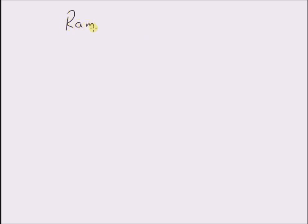Hello, welcome. In this short video, let us look at the ramp signal. The basic ramp signal can be defined as follows: R of t is equal to t times u of t, where u of t is the unit step signal.